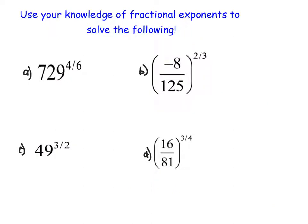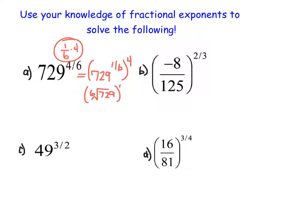So now let's try out these examples. Looking at example A, I notice that I have 729 to the power of 4 sixths. I'm going to rewrite this as 729 to the power of 1 sixth, all raised to the power of 4 — doing the powers-to-powers rule in reverse. Then I rewrite that as a root: the sixth root of 729. What to the power of 6 gives me 729? That is 3. So I now have 3 to the power of 4, which is 81.